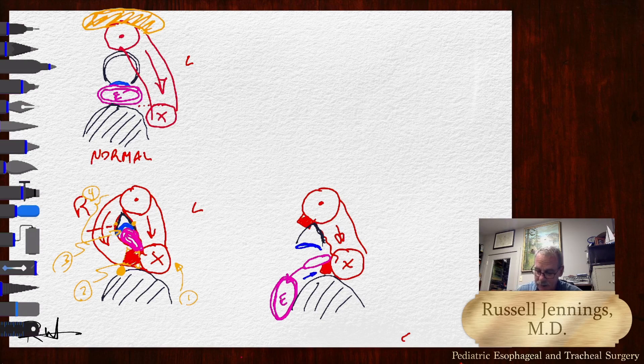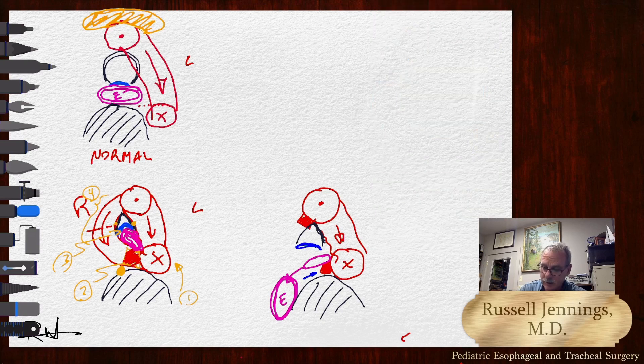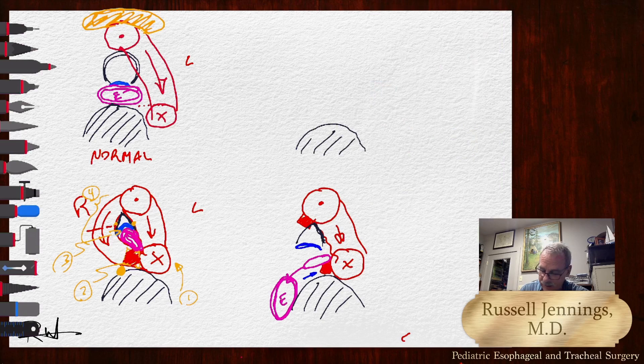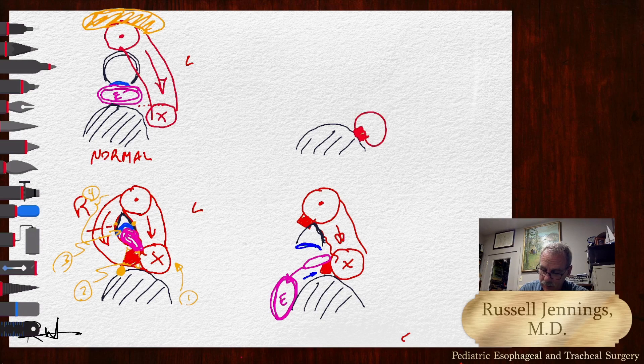So the next step in the operation that we tend to perform is to, here's the spine for reference, is to move that descending aorta and the stump down here. But we've moved it to the side of the spine where it belongs.